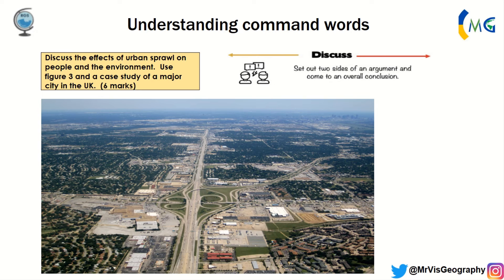There's another six-mark question that says: discuss the effects of urban sprawl on people and the environment — use figure three and a case study of a major city in the UK. When you 'discuss' something, it's like a debate — you have to give both sides. The effects can be positive and negative, and you have to talk about social effects on people and environmental effects. I'd probably look at having two paragraphs: one covering the pros and cons of urban sprawl on people, and one on the environment.